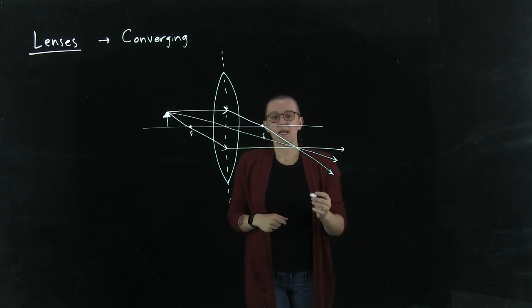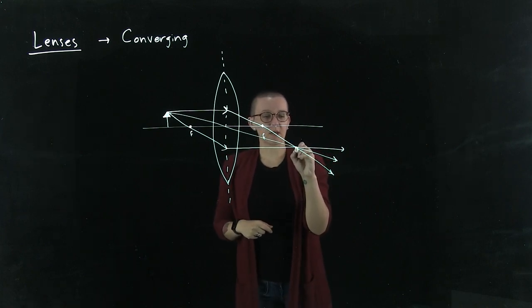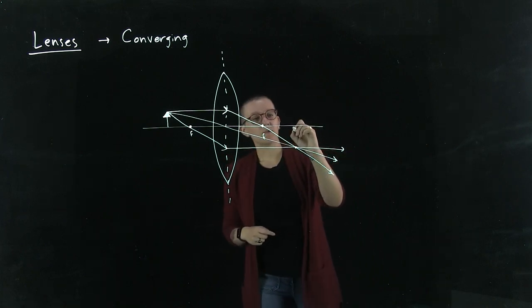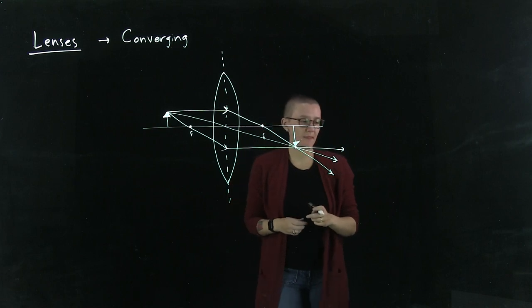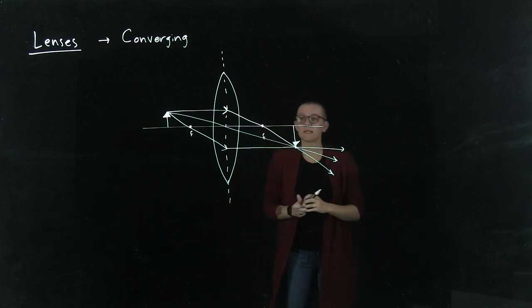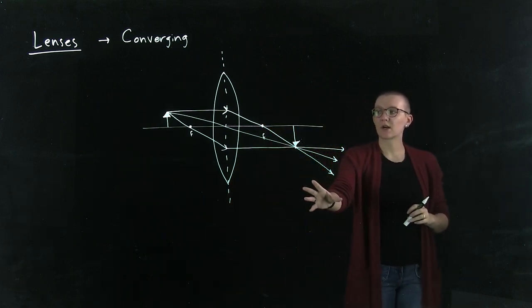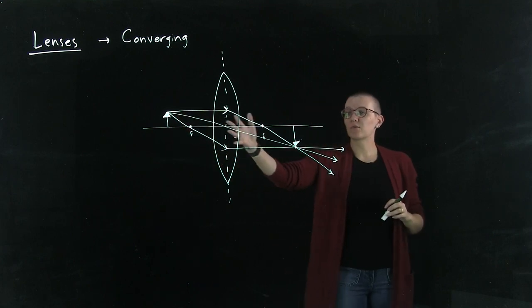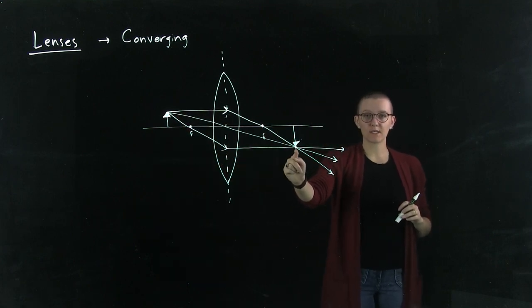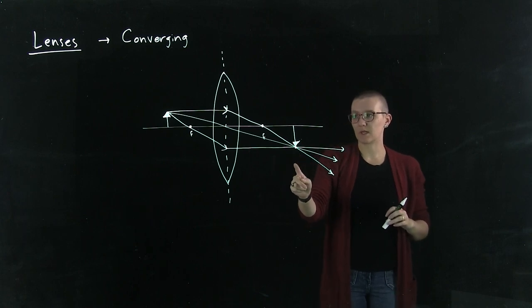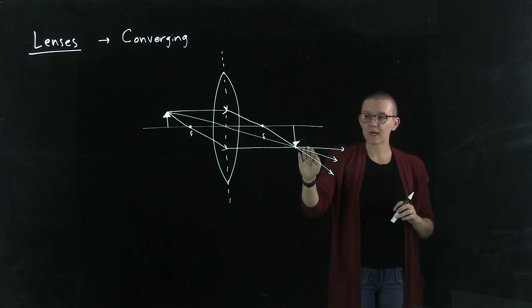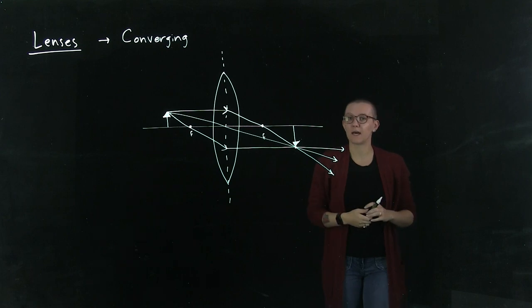Now we see that there is this point here where they all intersect and we can draw our arrow, our image. For this situation in particular, we have light traveling through the lens to this point where this image is located. This image is a real image because the light rays are actually traveling to the location of that image.